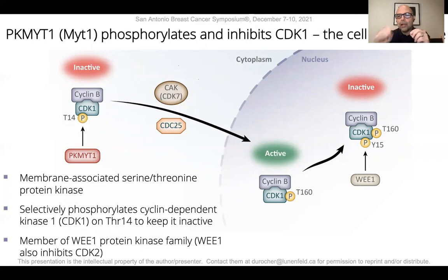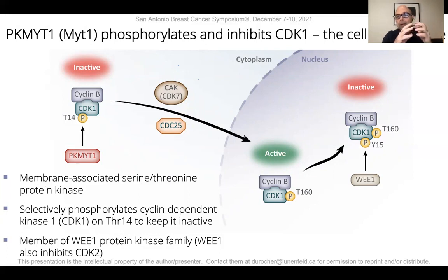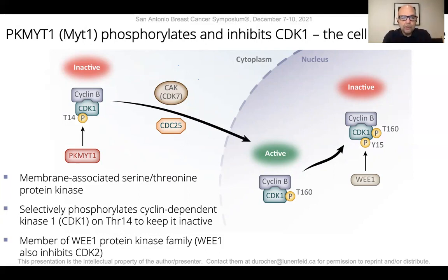First, PKMYT1, unlike WEE1, is selective for CDK1, whereas WEE1 inhibits and phosphorylates both CDK1 and CDK2. Furthermore, PKMYT1 is cytoplasmic, associated with endomembranes in the cytoplasm. We think this is important because CDK1 and cyclin B accumulate in the cytoplasm first before being activated and translocated into the nucleus.